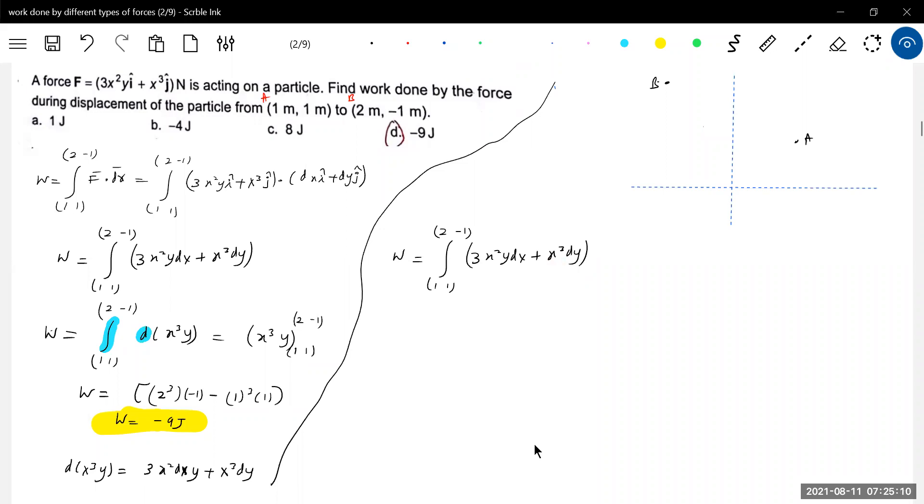Now first, 2, minus 1, 2, minus 1. I raise below no? Somewhere. I don't have place, so I will scribble here. 2, minus 1, 2, minus 1, will be here. I am going to move the, I am going to display the particle from A to B. This one.